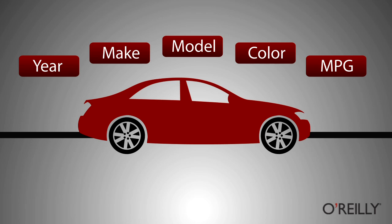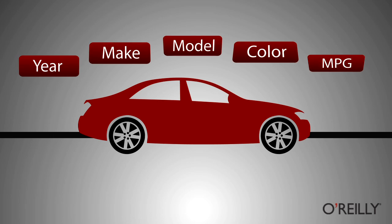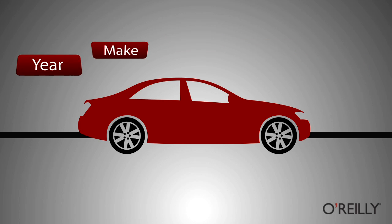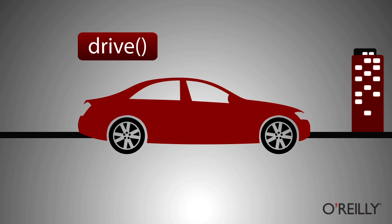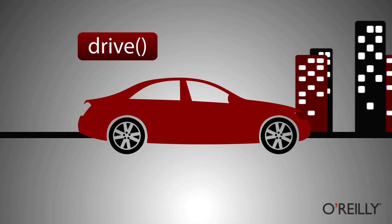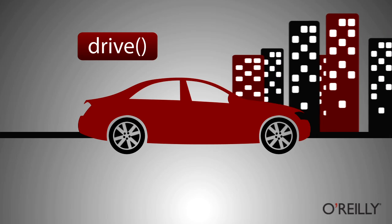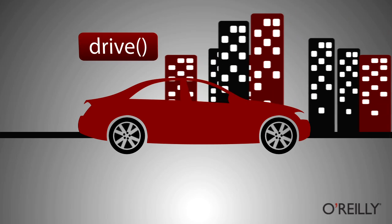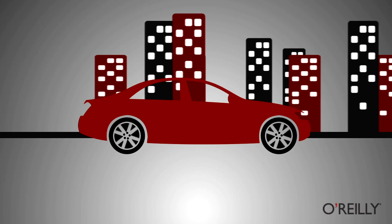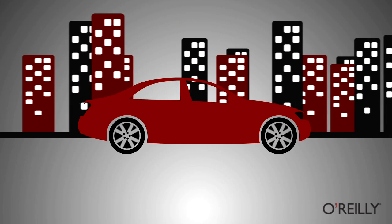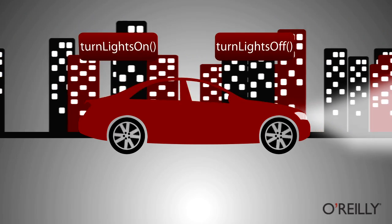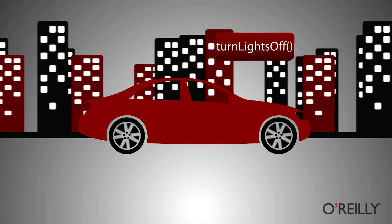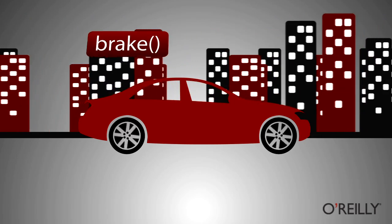In addition to just the properties, an object can have behavior. For instance, you can tell a car to drive, and then the car knows how to do that. You don't have to worry about how it drives — it just drives. Or you can tell the car to turn the lights on, turn the lights off, or to brake.